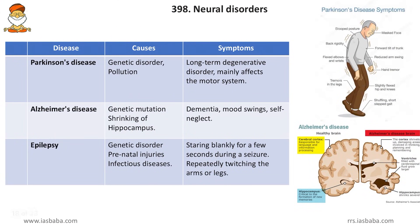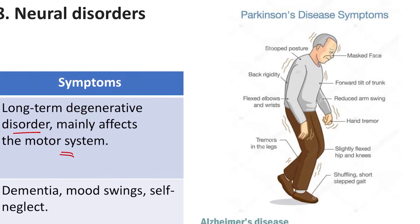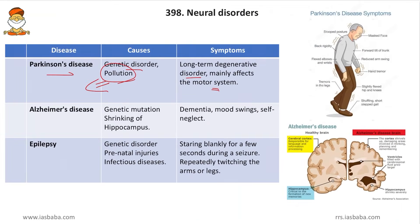Parkinson's disease, Alzheimer's disease, and epilepsy are frequently discussed neural disorders. Parkinson's disease is caused by genetic disorder and may also be caused by pollution. It is a long-term degenerative disorder affecting the motor system — your voluntary muscles for hand and leg movement. A Parkinson's patient is unable to move their legs and hands properly. It is mainly due to the age factor — as you age, Parkinson's disease can set in due to mutations in the brain.